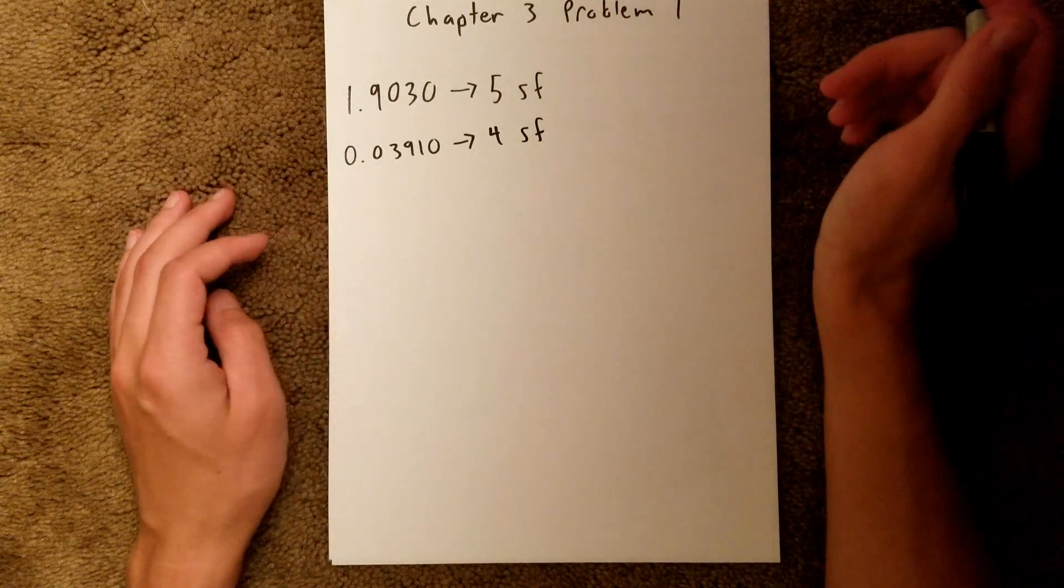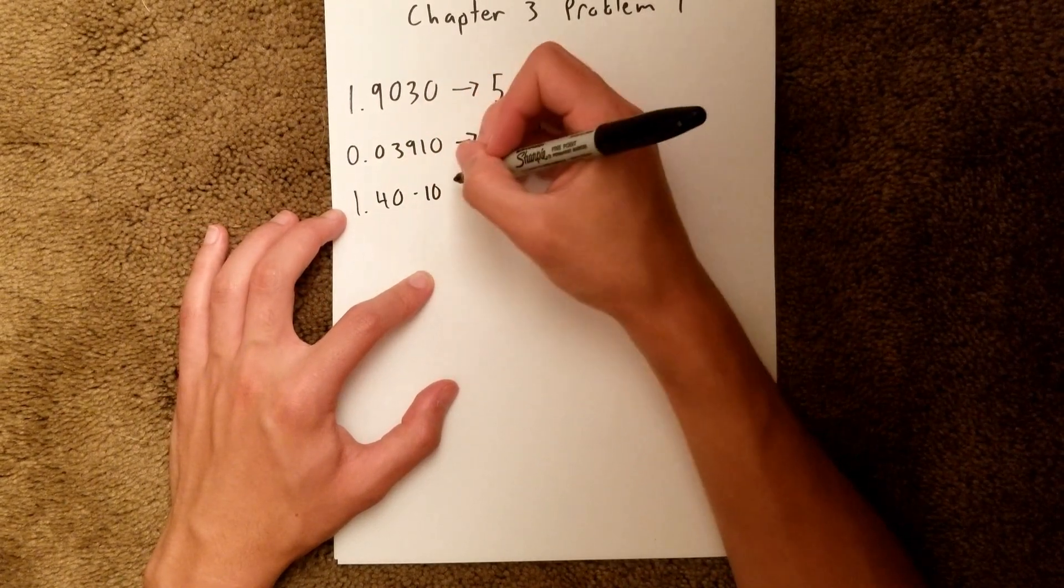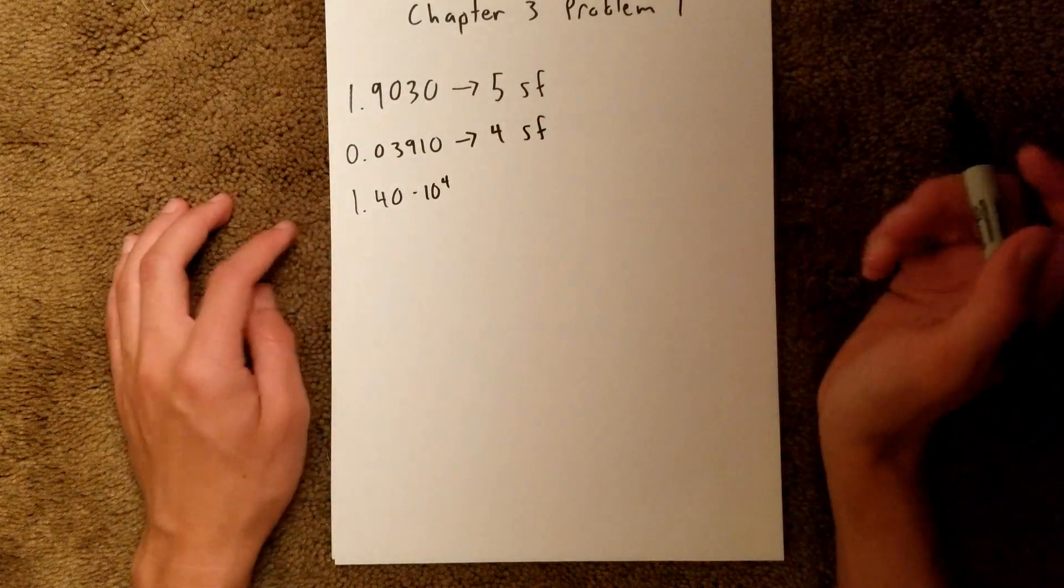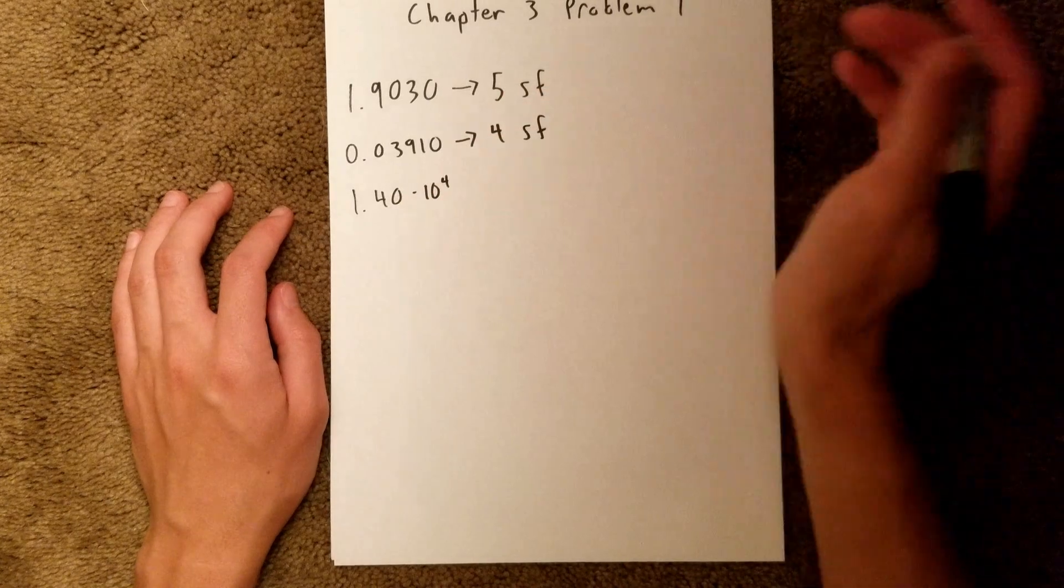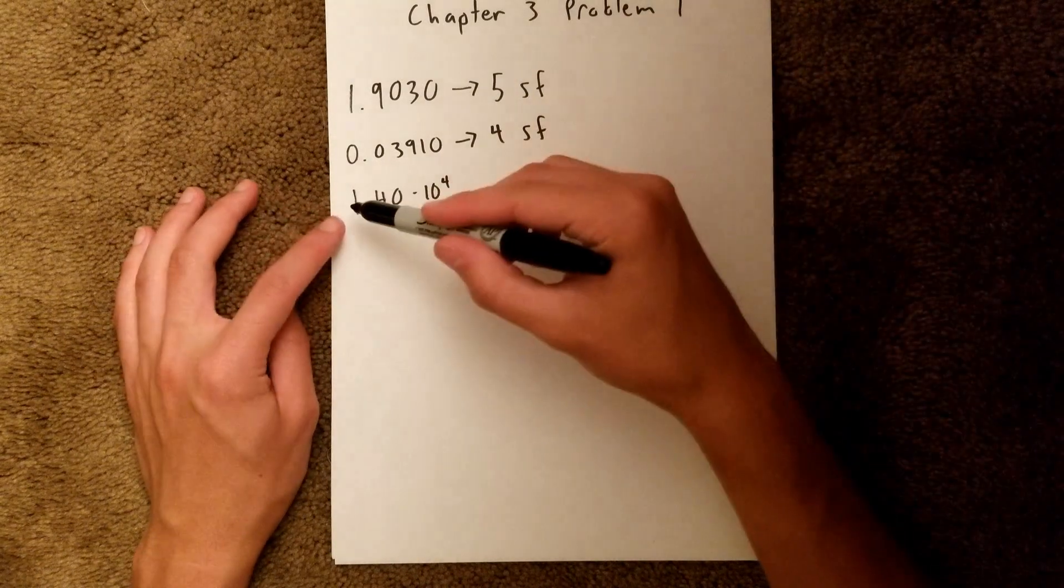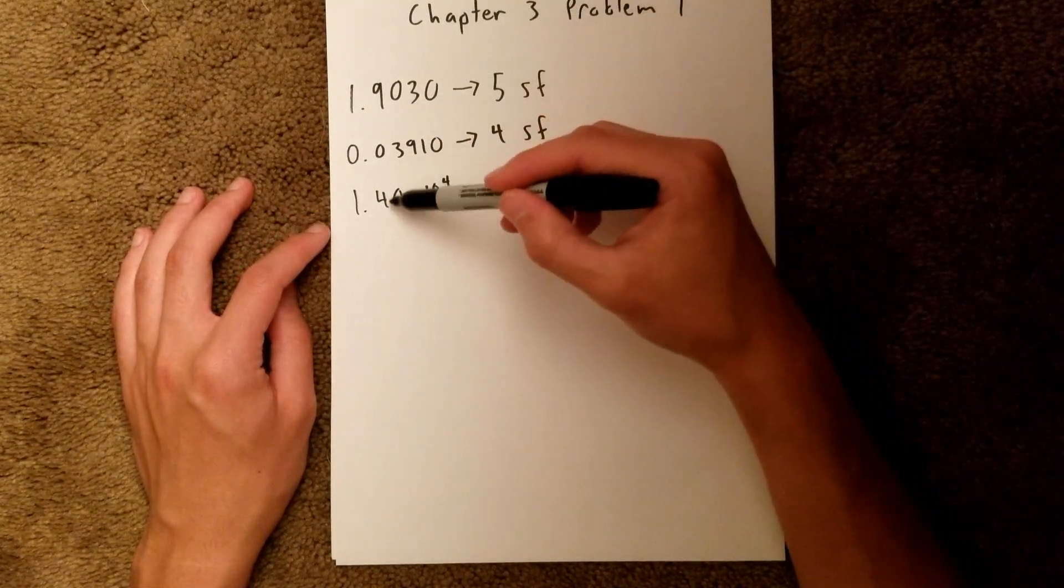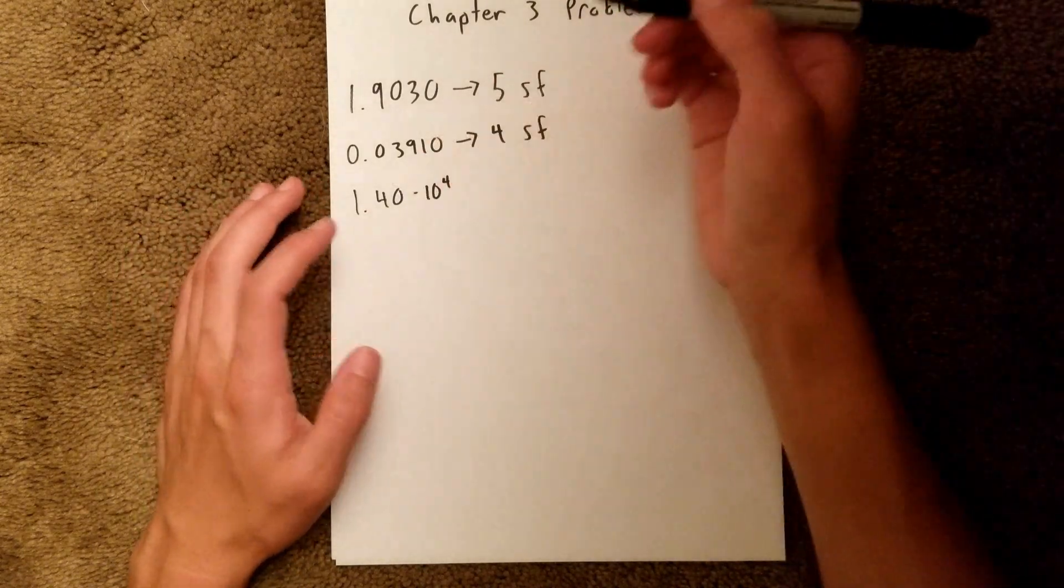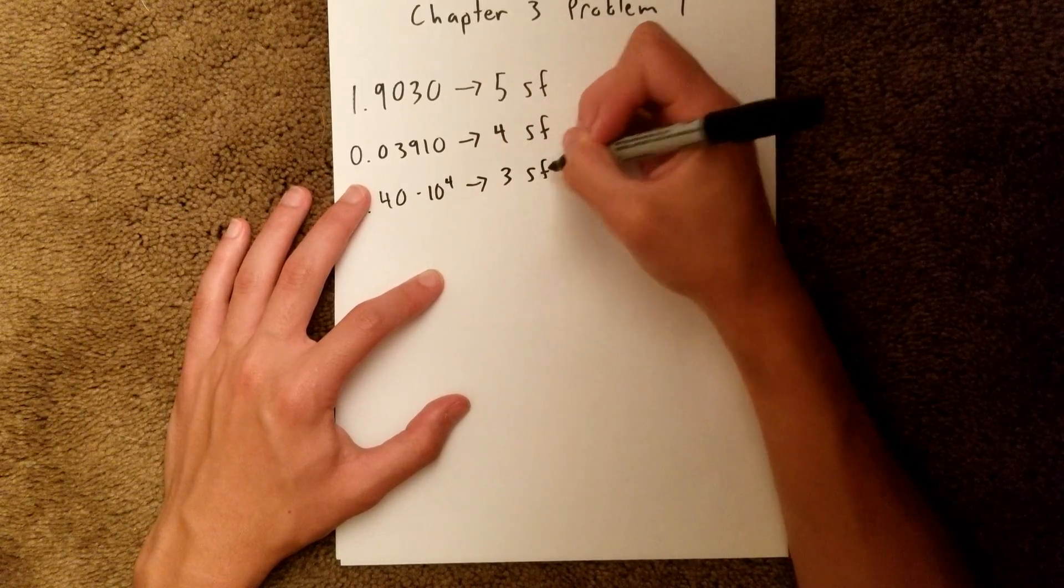And the last value that we are given in this problem is 1.40 times 10 to the fourth. And as you can see, this is in scientific notation, and we don't have to worry about this times 10 to the fourth. That has nothing to do with the significant figures. It is just this value right here. And so we have two non-zero digits, which are significant. And once again, we have a zero at the end that is past the decimal point. So that zero is significant, and we have three sig figs.